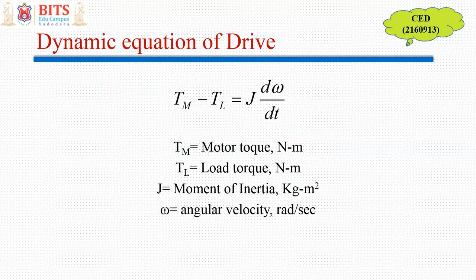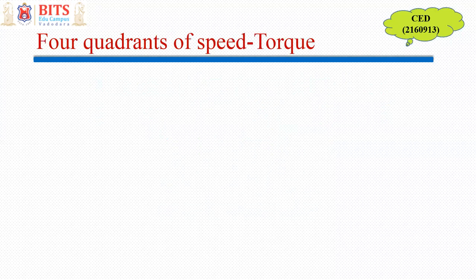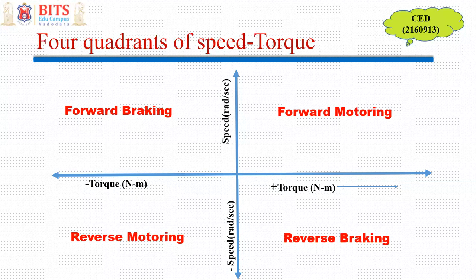This is the dynamic equation which we keep in mind whenever we discuss any drive in motion. This equation is derived using Newton's second law: net torque equals rate of change of angular momentum. The four quadrants represent the combinations in which an electric drive can operate. We generally take torque on the x-axis — positive torque and negative torque — and speed on the y-axis — positive speed and negative speed. These two axes divide the plane into four parts, and we must first establish the nomenclature for positive and negative.